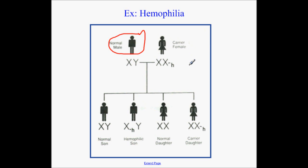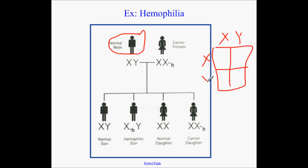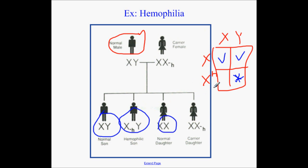Let's take a look at the children. Running the Punnett square two by two: a normal boy, a hemophiliac boy, a normal girl, and a girl who is normal but would be a carrier. She shows a normal phenotype but she's carrying a little surprise there which might turn up later on.